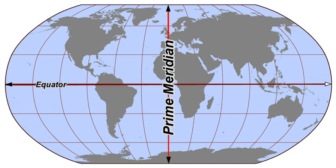In geography and cartography, the hemispheres of Earth refer to any division of the globe into two hemispheres. The most common such divisions are by latitudinal or longitudinal markers.